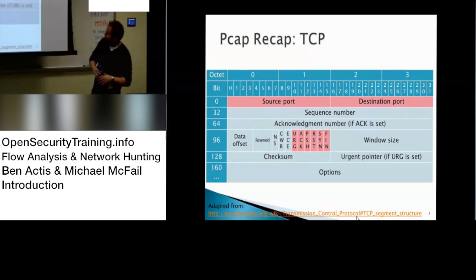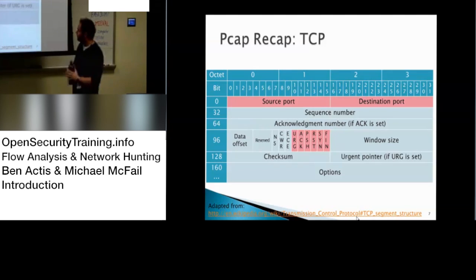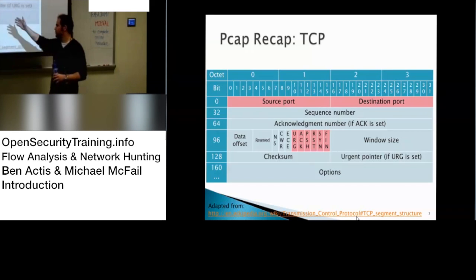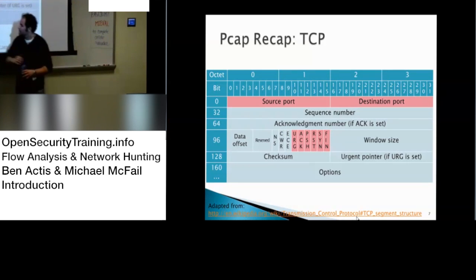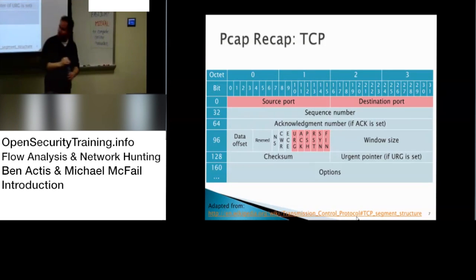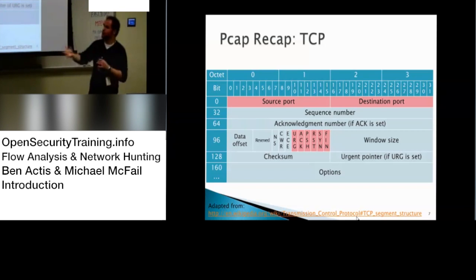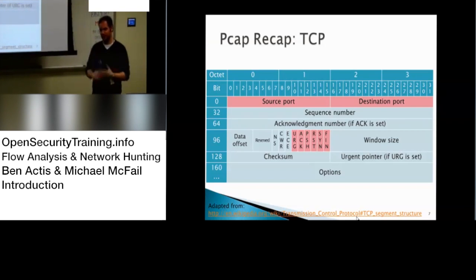In terms of TCP, you have primarily your source port and destination ports, and these flags which are important for NetFlow: Urgent, ACK, Push, Reset, SYN, FIN. TCP will do retransmission if something is not sent properly or there's disruption.